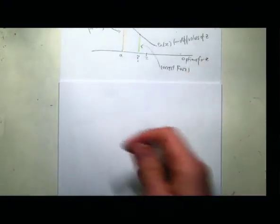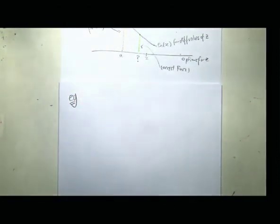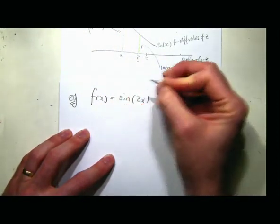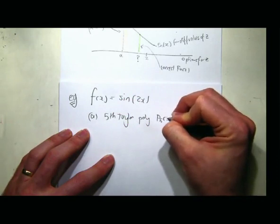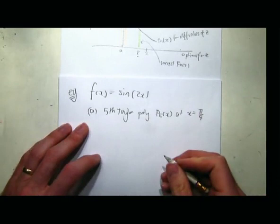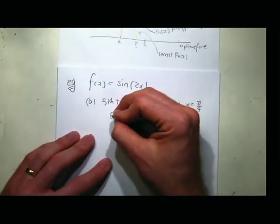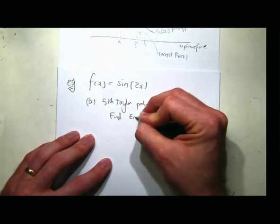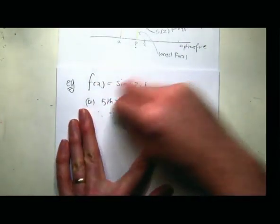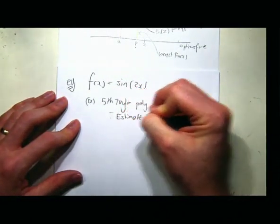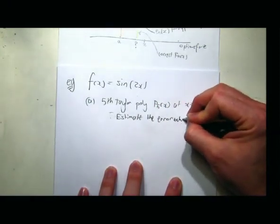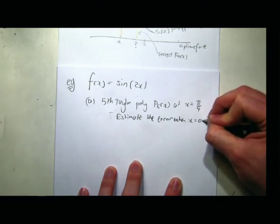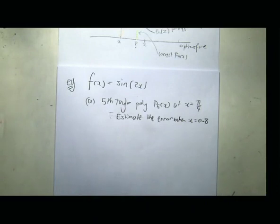Let me do an example. f(x) is sin(2x). Part A: find the fifth Taylor polynomial P5(x) at x equals π/4. And we'll estimate the error for when x equals 0.8, which is quite close to π/4. π/4 is about 0.78.